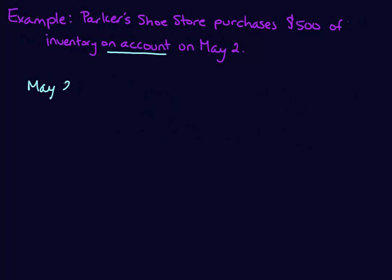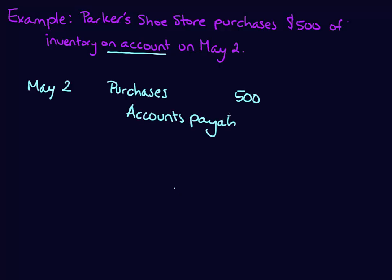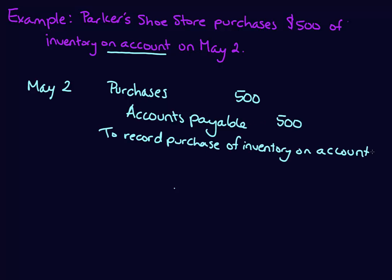In this example, we're purchasing $500 of inventory on account on May 2nd. Remember, 'on account' means we are going to be paying later. Our journal entry is a debit to the Purchases account for $500 and a credit to Accounts Payable for $500.